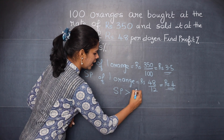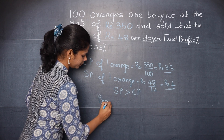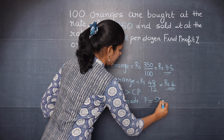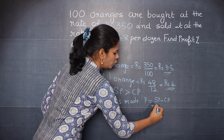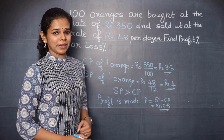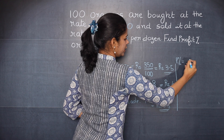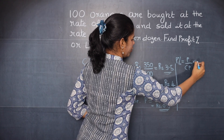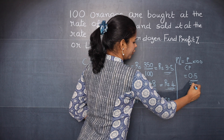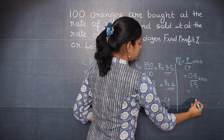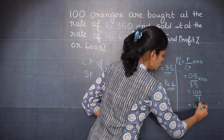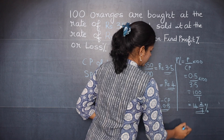SP is greater than CP, so profit is made. Profit equals SP minus CP — that is 4 minus 3.5, which equals 0.5 rupees. Now finding the profit percentage: profit percentage equals profit divided by CP, multiplied by 100 — that is 0.5 divided by 3.5, multiplied by 100, which equals 100 by 7, or 14 and 2/7 percent.